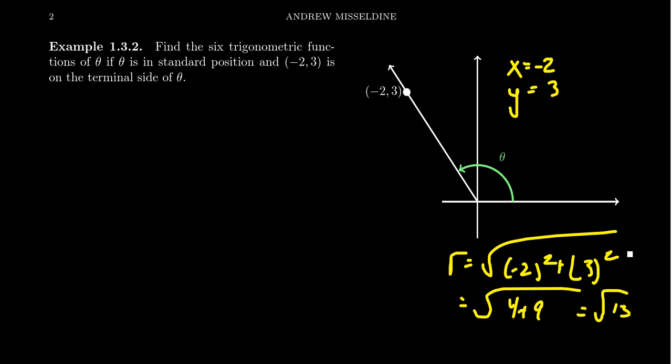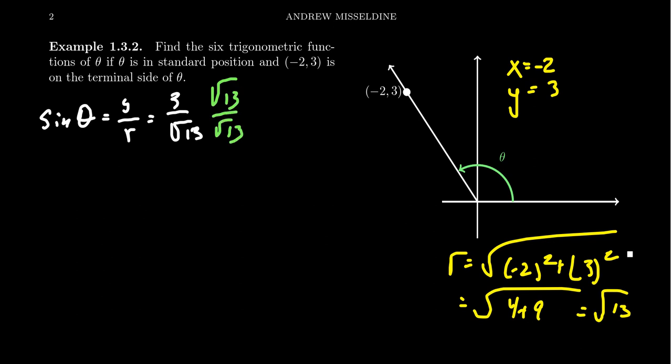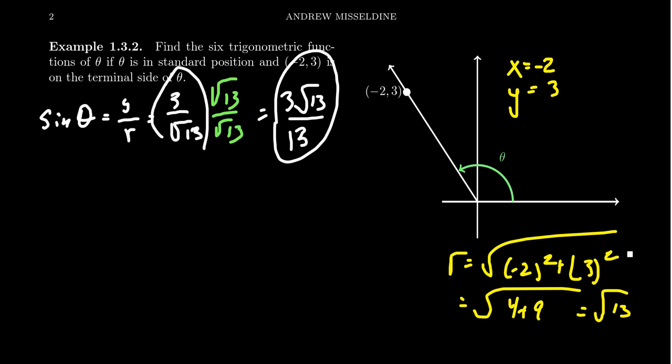Going through the definitions: sine of theta is y over r, so we get 3 over the square root of 13. You might have been taught that whenever the denominator is irrational, you must rationalize it. If you did that, you'd multiply top and bottom by the square root of 13, giving you 3√13 over 13. However, this might not necessarily be simpler — it takes more symbols to describe the same ratio. The reason we rationalize fractions is for adding fractions together, not for simplification itself. Since we're not adding fractions, rationalization is not necessary here — if you don't rationalize the denominator, you will be forgiven.